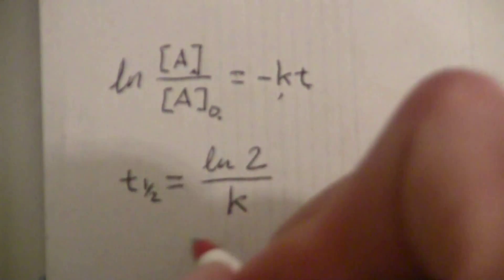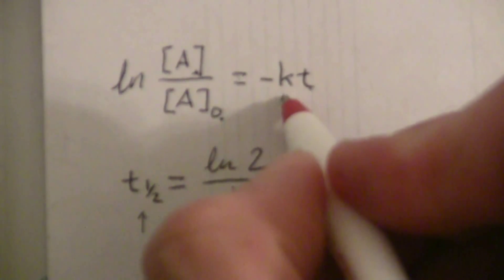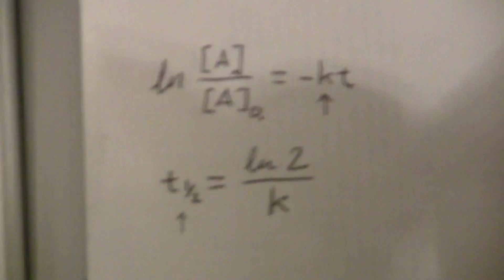So, with this, I have my half-life, I can find K, then I can plug that into there, and I have those, so I can solve for the time.